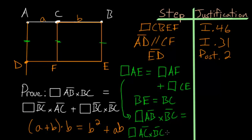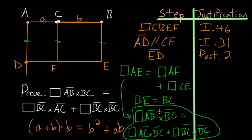...and the square on CE, we already know that that's contained by BC and BC. So I'll just rewrite that. We have the square contained by BC and BC. And notice that what we just wrote here, this equation, this is exactly what we're trying to prove. So we can end our proof here with QED.